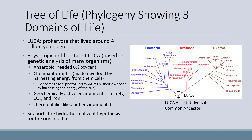The physiology and habitat of LUCA, based on genetic analysis of many organisms, was anaerobic — which means it needed absolutely zero oxygen and would be poisoned by any oxygen being present. It was also chemoautotrophic, meaning it made its own food by harnessing energy from chemicals. For comparison, photoautotrophs make their own food by harnessing energy from the sun. LUCA also lived in a geochemically active environment rich in hydrogen, CO2, and iron. And finally, LUCA was thermophilic, meaning it liked hot environments. This all supports the hydrothermal vent hypothesis for the origin of life.